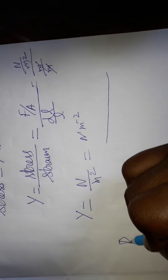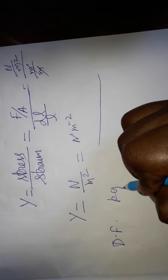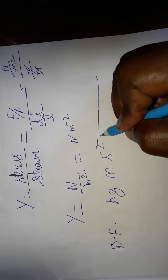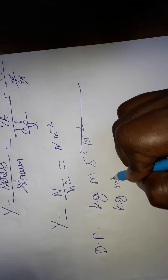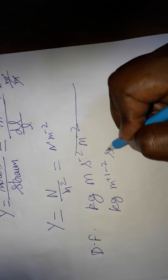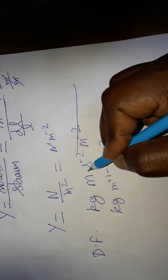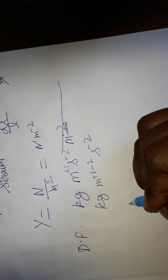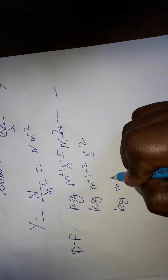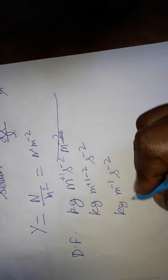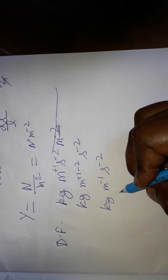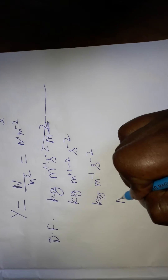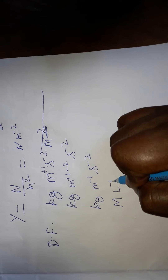The dimensional formula for modulus of elasticity: force is kg·m·s⁻², divided by meter squared, giving kg·m⁻¹·s⁻². So the dimensional formula is M L⁻¹ T⁻², which is the dimensional formula and SI unit for the modulus of elasticity.